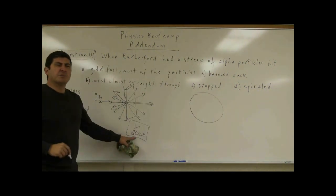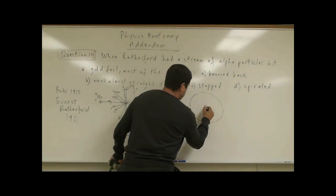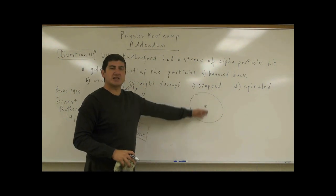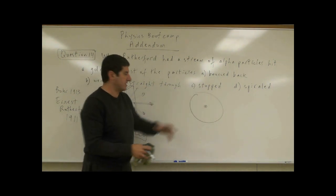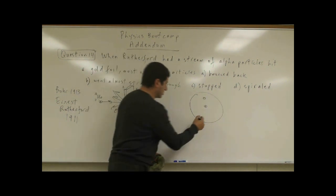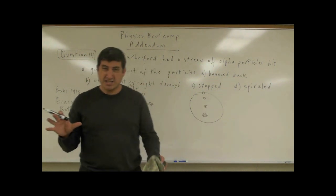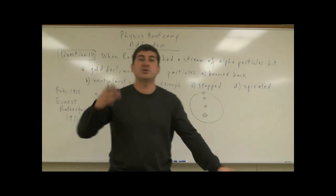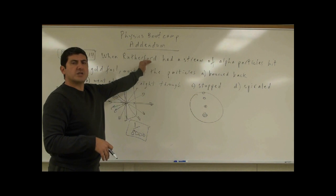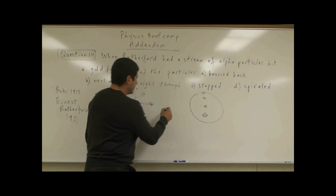If the majority went through, it means the nature of the atom is such that there is mostly empty space. The charges are not distributed randomly — the positive charge is concentrated at the center and the negative charges have certain orbits around it. The gold foil experiment showed us that there was a lot of empty space in the atom.